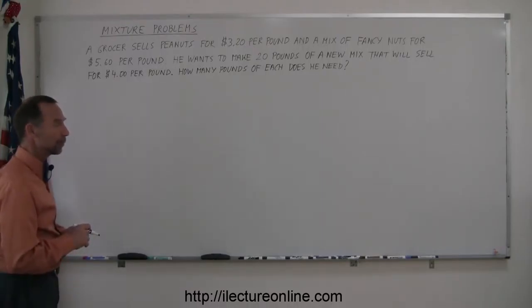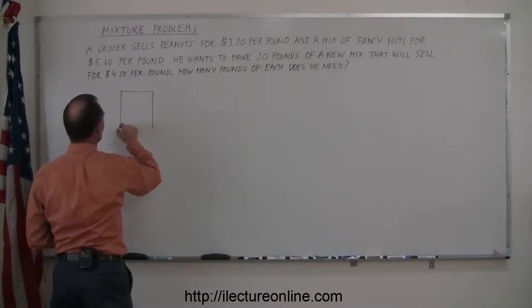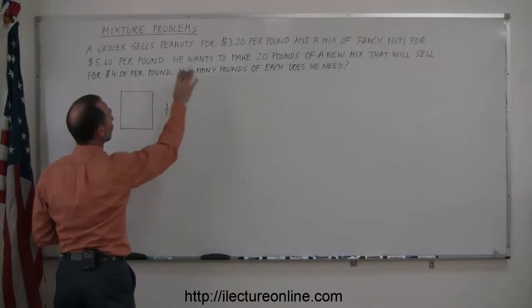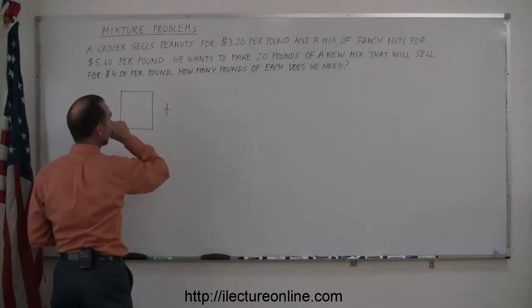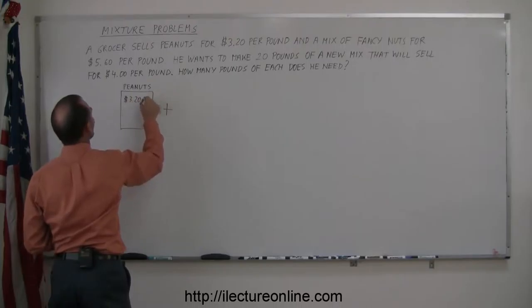Just like with any other mixture problem, it's a good idea to represent each mixture by a box. So this represents the mixture with peanuts at $3.20 a pound. So this is peanuts. And the price per pound is $3.20 per pound.